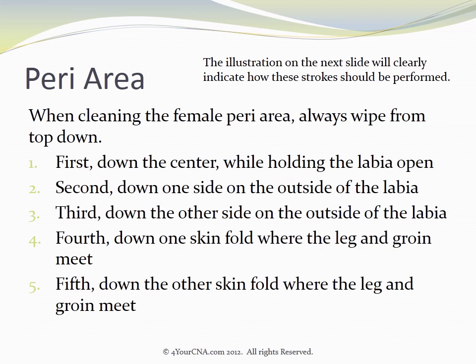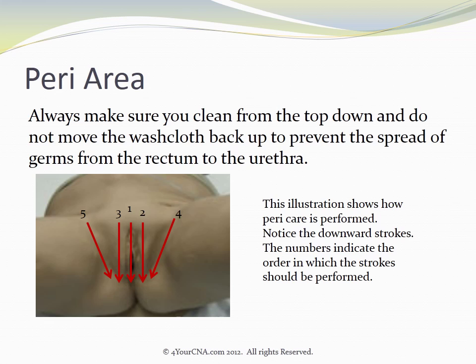When cleaning the female peri area, always wipe from the top down using five strokes. The first stroke will be down the center while holding the labia open. The second stroke will be down one side on the outside of the labia, and the third stroke will be down the other side on the outside of the labia. The fourth stroke will be down the skin fold where the leg and the groin meet, and the fifth stroke will be down the other side on that skin fold. Always clean from top down and do not move the washcloth back up, to prevent the spread of germs from the rectum to the urethra.